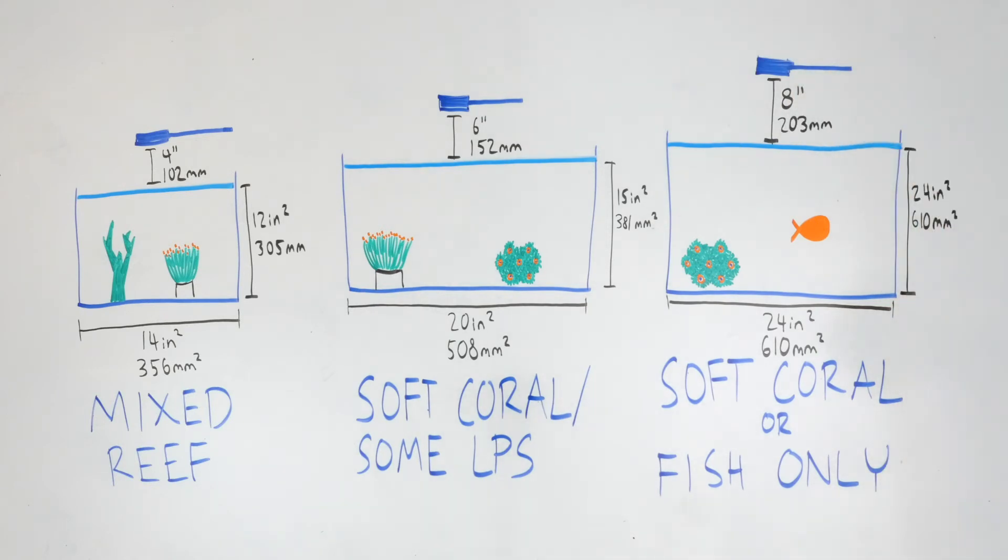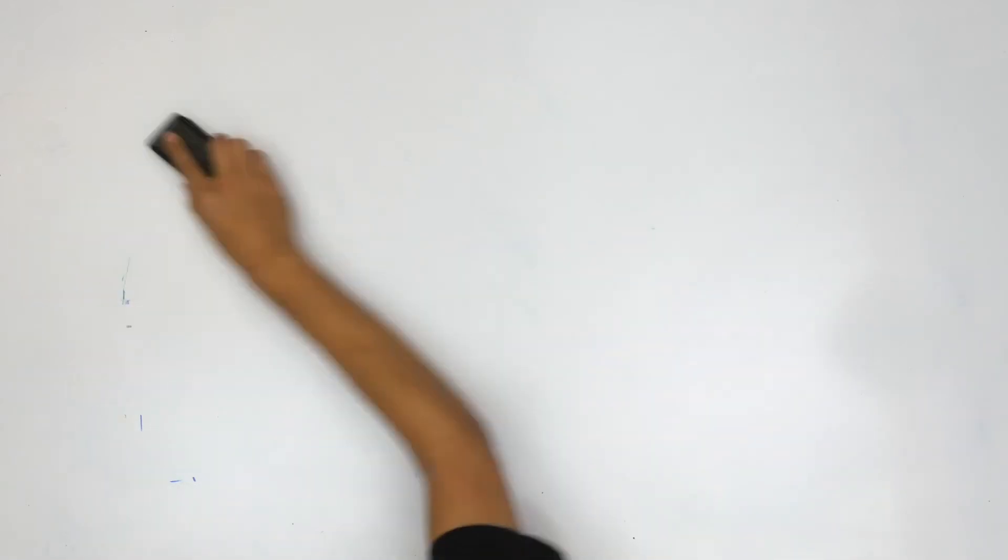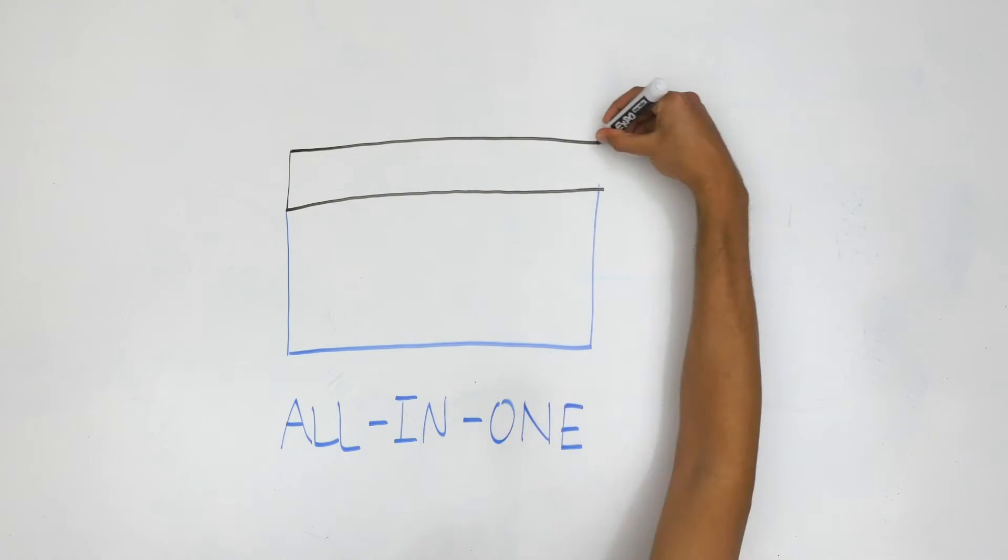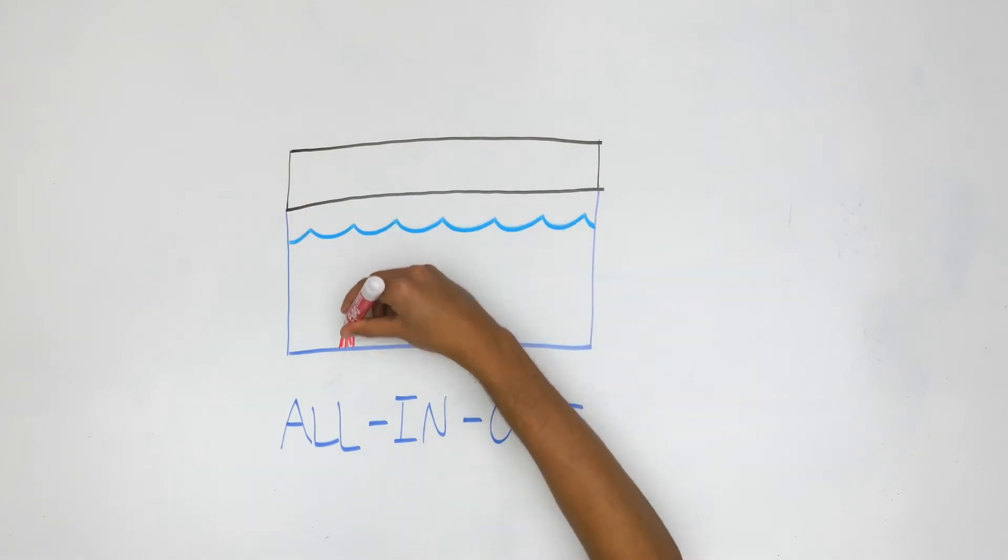You can use the A80 for deeper tanks, but we don't recommend having any photosynthetic organisms below the depth provided for each corresponding setup. The A80 Tuna Blue can also be installed into all-in-one aquariums, with a built-in wood or plastic canopy.